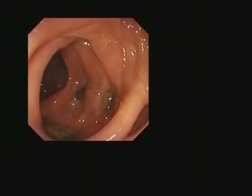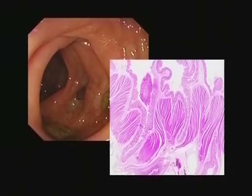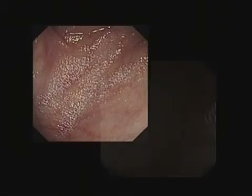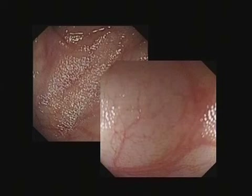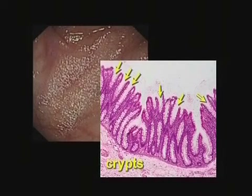The haustral folds and circular muscles can be thickened or hypertrophied in diverticular disease. Watching the surface highlights carefully, if there's not too much mucus, the endoscopist can glimpse the crypt or pit openings seen here on microscopy.